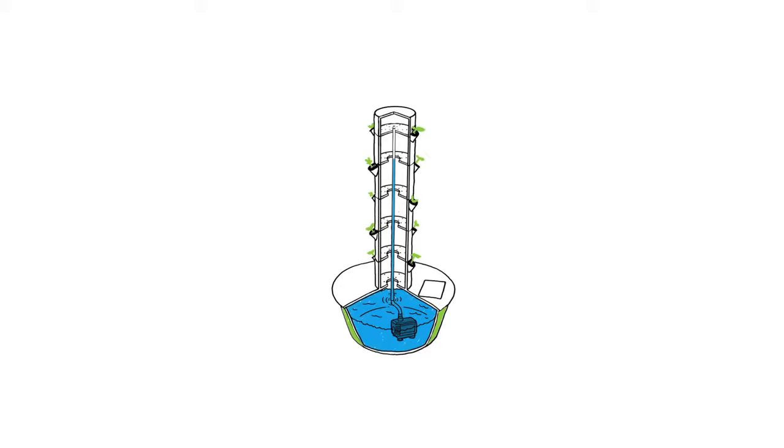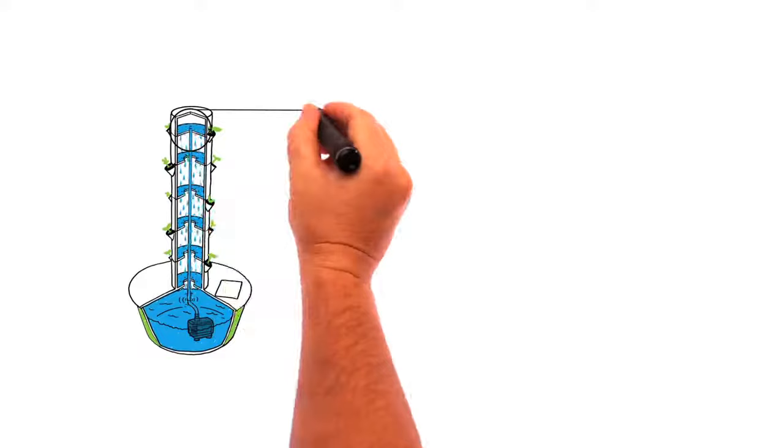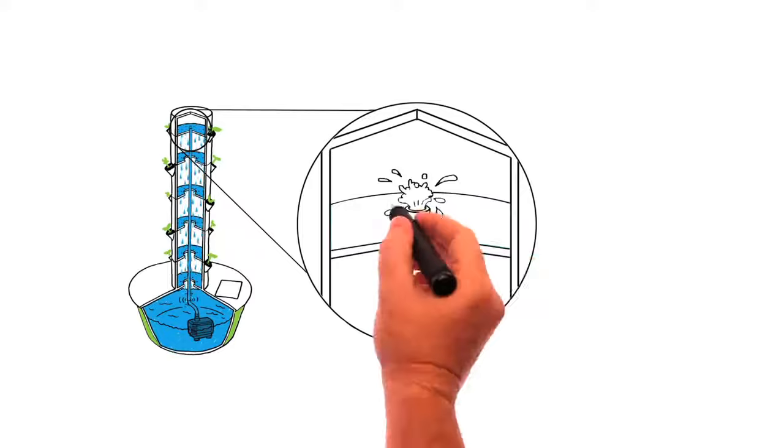From there, the nutrient solution drips through the central tower using a special device that evenly cascades the solution over the exposed plant roots. On the journey down the tower, the nutrient solution feeds the roots and becomes highly oxygenated as it cascades gently down to the reservoir.